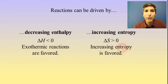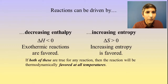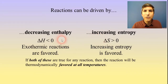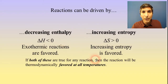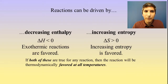If you see a chemical reaction where entropy is increasing, or delta S is positive, the universe favors that increasing entropy. Now, if both of these statements are true — if you have a reaction that's both exothermic and its entropy is going up, its delta S is positive — then that chemical reaction is going to be thermodynamically favored at all temperatures. It will always be thermodynamically favored. There are some processes out there that are like that.